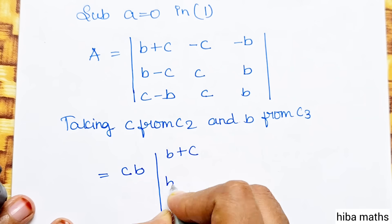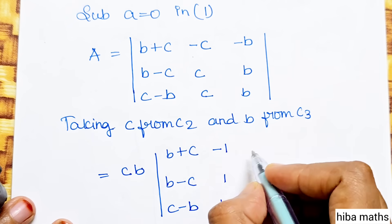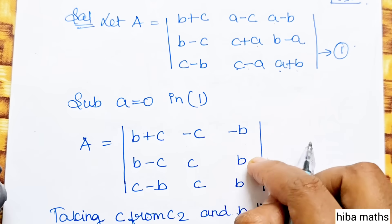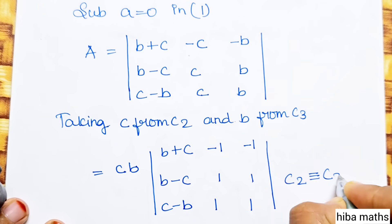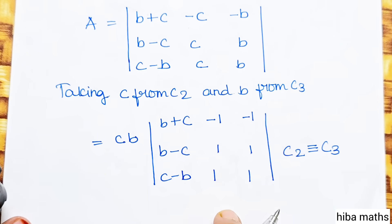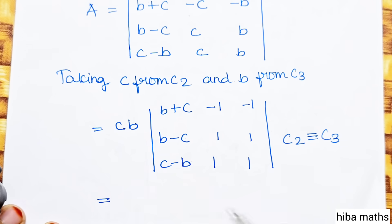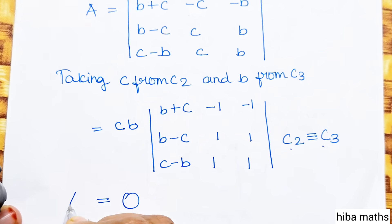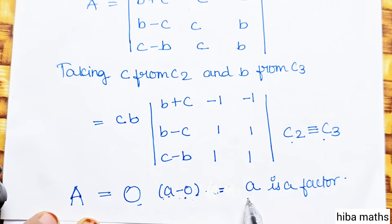After taking C from C2 and B from C3, we get C times B. The entries become: B plus C, B minus C, C minus B in one column; then minus 1, 1, 1 in the second column; and minus 1, 1, minus B, B, B in the third column. Now column C2 is equivalent to C3 — they are identical — so the determinant value is 0.